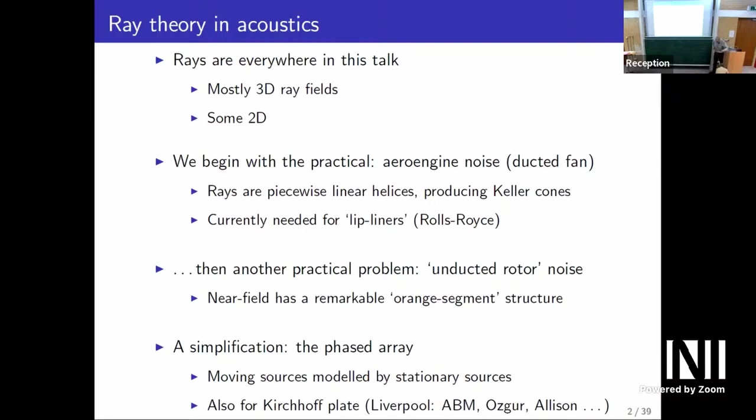I'm going to start out with the actual ray approach that I use for real in the aircraft industry. Mostly I'll be looking at 3D ray fields, but we'll also analyse 2D fields. A topic I looked at in airway noise is the effect of the rotating sound field produced by the fan. That fan is within a duct, so the field is reflected repeatedly from the duct walls. The natural modal way to represent that involves Bessel functions and exponential functions, and I'll give the ray analysis of that.